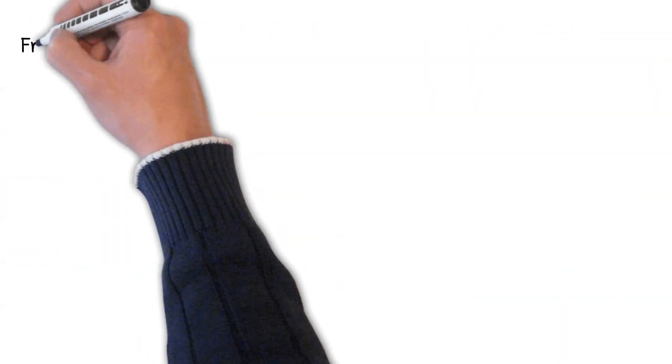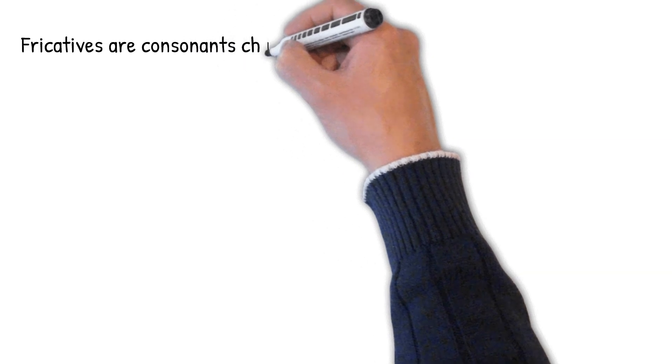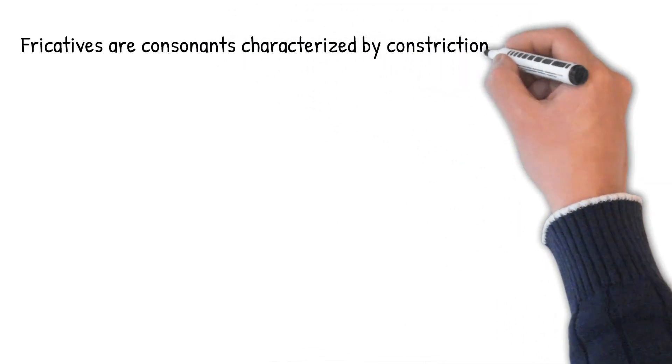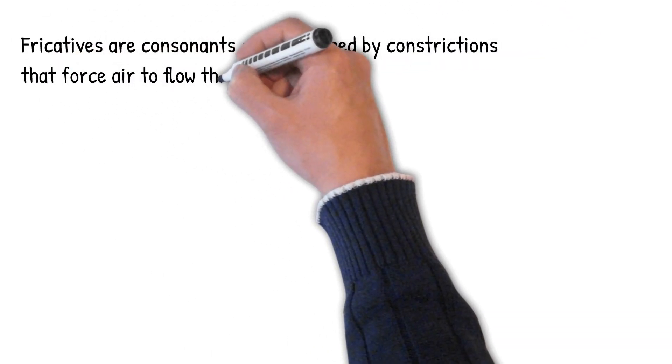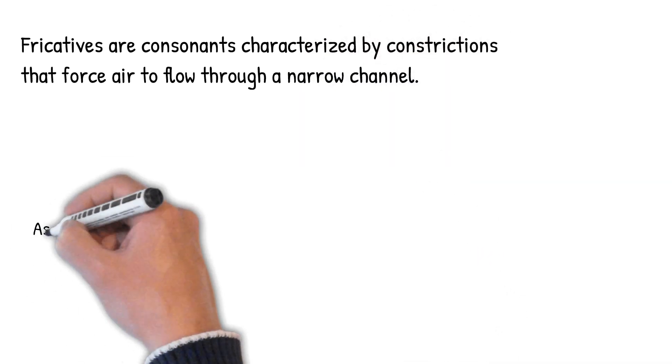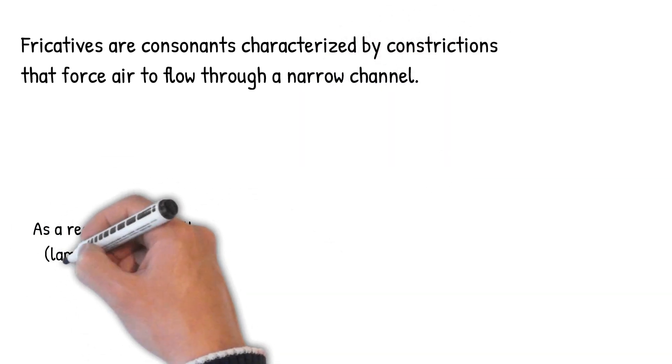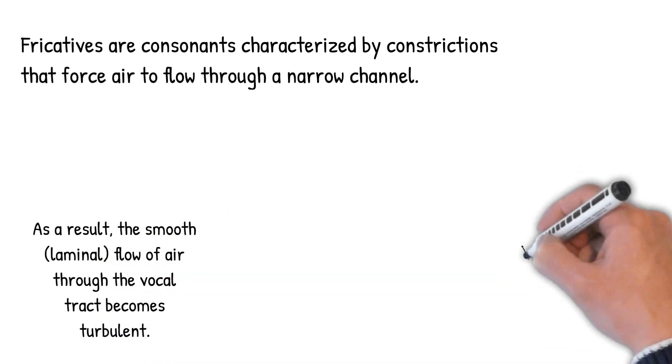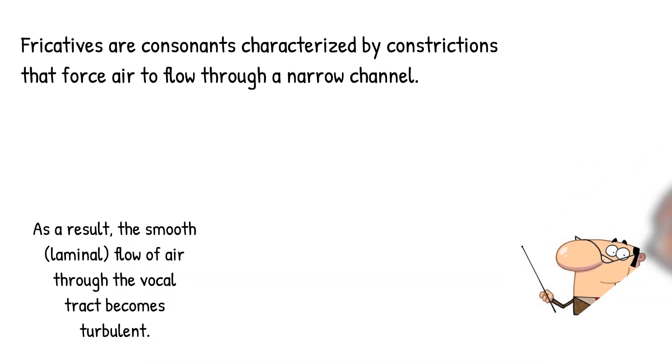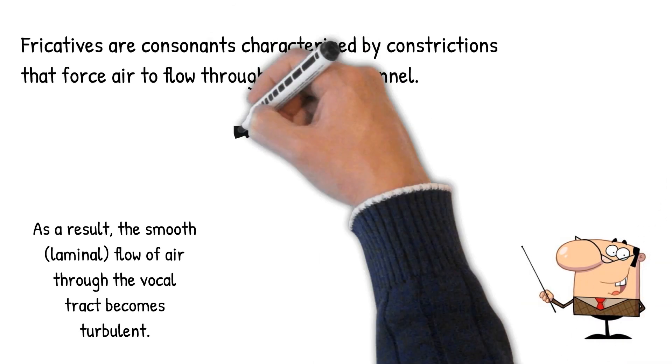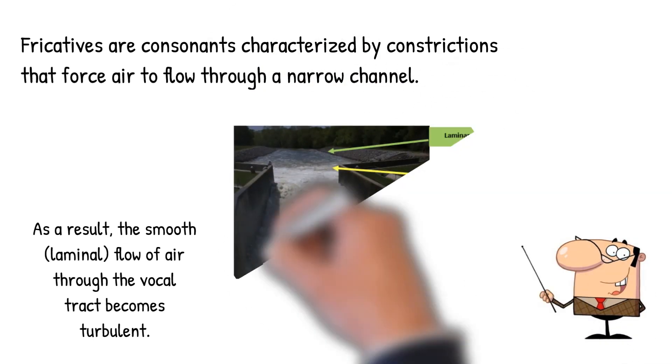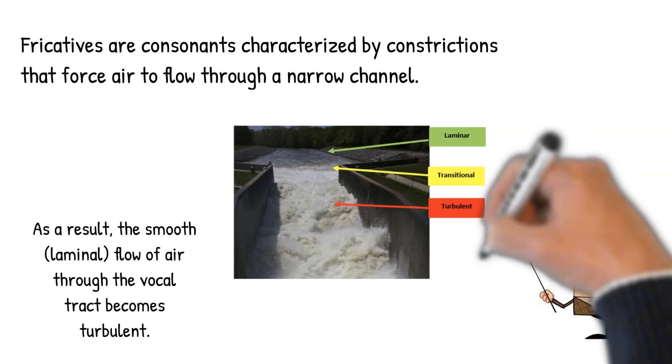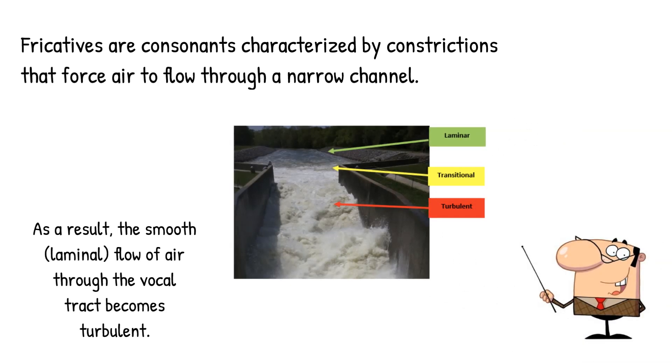So when we make fricatives, we make sounds that force air through a narrow opening. Because of this, the smooth or laminar flow of air that's coming up from our lungs becomes turbulent. The same principle can be seen here in the illustration showing water which is flowing fairly smoothly until it reaches a narrowing in its path, at which point it becomes turbulent.